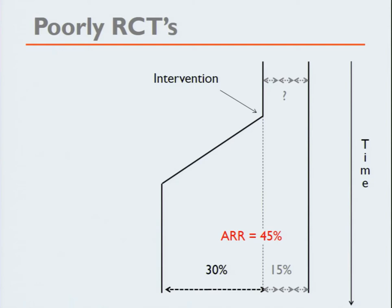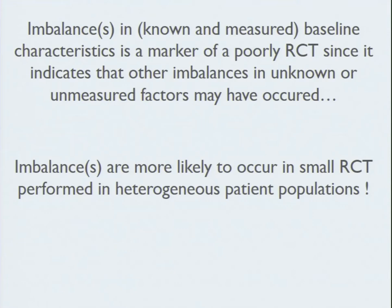Don't believe in studies with two times 20 patients in the ICU. The largest trials need at least two times 800 or two times 2,000 patients sometimes to make a difference. A randomized controlled trial with two times 80 or two times 150 patients, certainly for mortality, with one or two baseline differences, simply means the trial is not truly randomized — even if the investigators did their best. Imbalances in known and measured baseline characteristics are a marker of poor randomization, since they indicate other imbalances in unknown or unmeasured factors may also occur. Such imbalances are more likely in small trials with heterogeneous patient populations.